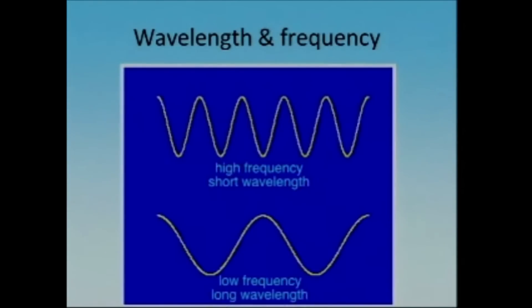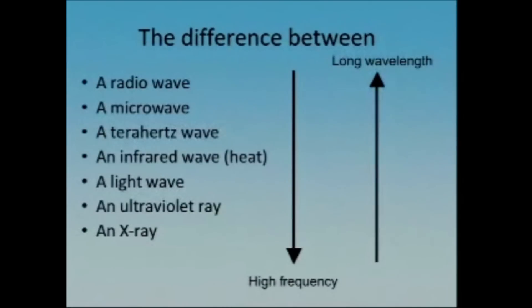On the top you have a picture of a high frequency wave that has a short wavelength, and on the bottom, a low frequency wave that has a long wavelength. The difference between these different kinds of waves is their frequency and their wavelength. As we go from radio waves to x-rays, the frequency increases and the wavelength decreases.